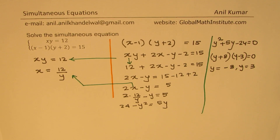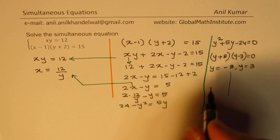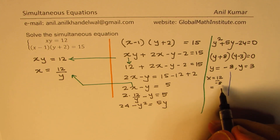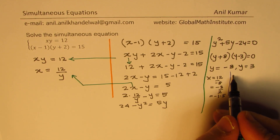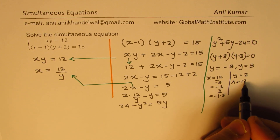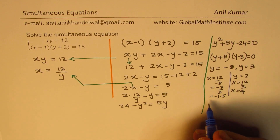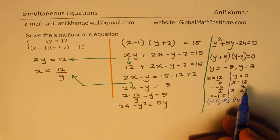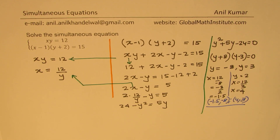For these values of y, we can find the value of x. If I substitute y equals to minus 8, x is equal to 12 over minus 8, which simplifies to minus 3 over 2, or minus 1.5. For y equals to 3, x is equal to 12 over 3, which means x is 4. So we get two solution points: (minus 1.5, minus 8) and (4, 3). I hope that makes sense.